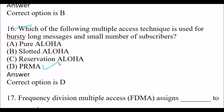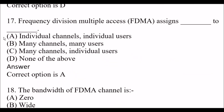Next question: Frequency division multiple access (FDMA) assigns blank space to blank space. Option A: individual channels and individual users respectively. Option B: many channels and many users respectively. Option C: many channels and individual users respectively. Option D: none of the above. The right answer is Option A, individual channels and individual users respectively. FDMA assigns individual channels to individual users.